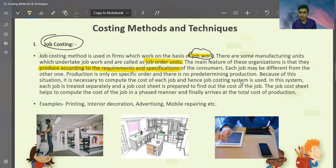Each job may be different from the other one. Every job is independent. Production is only one specific order and there is no predetermining production. Here is what predetermined production is. Buyer, customer, order, we have the production. That is the job costing. Each job may be different from the other one. Production is only one specific order and there is no predetermining production. Because of this situation, it is necessary to compute the cost of each job. Hence, job costing system is used. In this system, each job is treated separately and a job cost is prepared to find out the cost of the job. The job cost helps to compute the cost of the job in a phased manner and finally arrive at the total cost of the product.